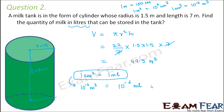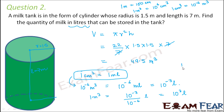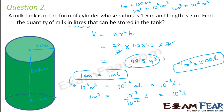Since 1 milliliter = 10⁻³ liters, therefore 10⁻⁶ milliliter = 10⁻³ liters. So 1 metre cube = 10⁻³ ÷ 10⁻⁶ liters = 10³ liters = 1000 liters. Knowing this relation, we can convert 49.5 m³ to liters: 49.5 × 1000 = 49,500 liters. So this much milk the tank can store.